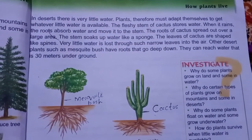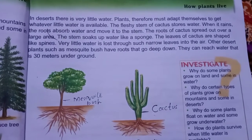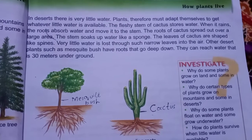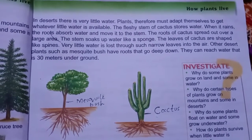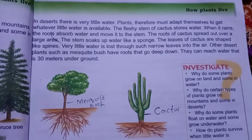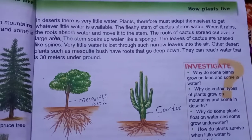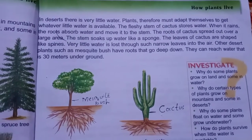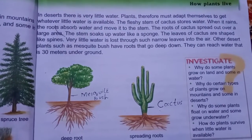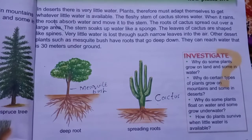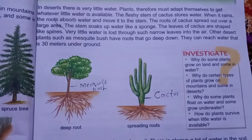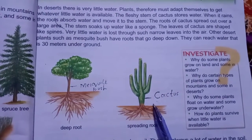Land کے desert area میں جہاں پانی بہت کم پایا جاتا ہے، ایسی places پر cactus جیسے plants grow کرتے ہیں۔ Deserts میں rainy season بہت کم ہوتا ہے — جب بھی بارش ہوتی ہے ان plants کے stems اس پانی کو absorb کر لیتے ہیں۔ Desert plants کی example میں mesquite bush بھی آتا ہے — ایسے plants کی roots deep down ہوتی ہیں یعنی underground سے water absorb کر کے plants تک پہنچاتی ہیں۔ اس طرح cactus اور mesquite bush desert میں بھی survive کرتے ہیں۔